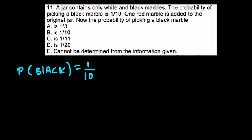Okay, so they want to know if you add one red marble, what happens to the probability of picking a black marble? Well, what's guaranteed is that it'll be less likely to pick a black marble because there's another non-black marble being introduced into the jar. But here I would say that the answer is E, that you can't really solve this.